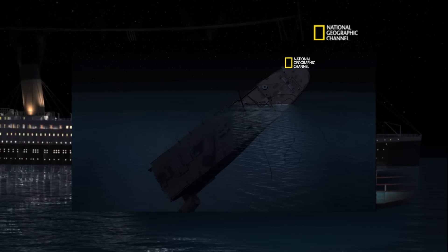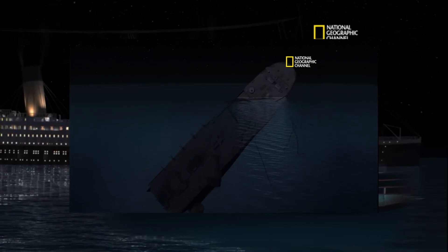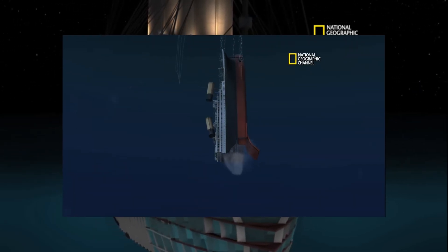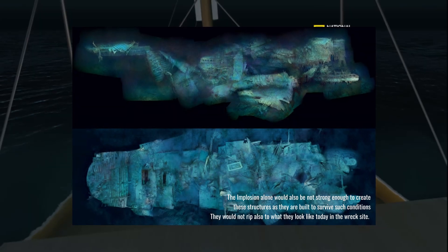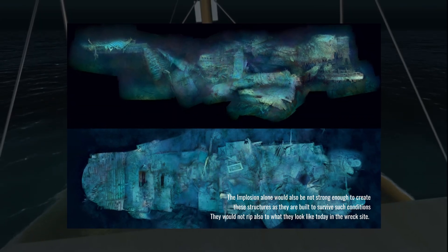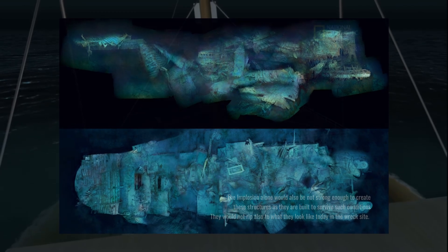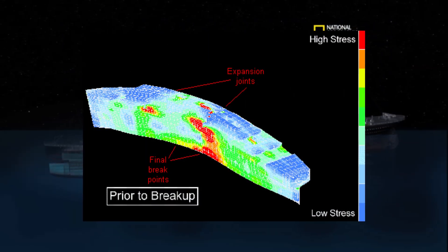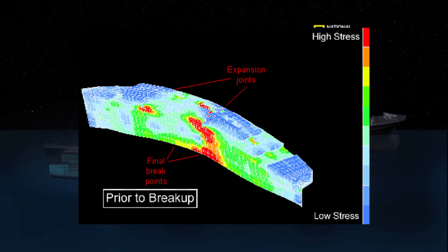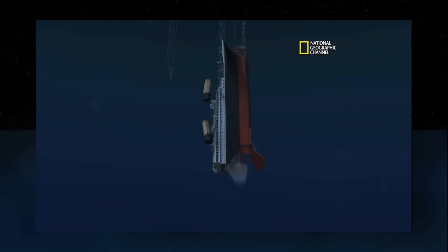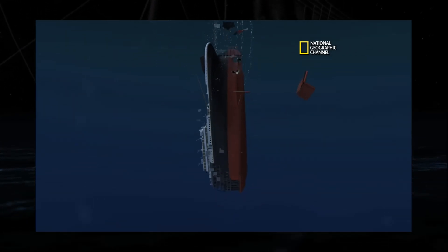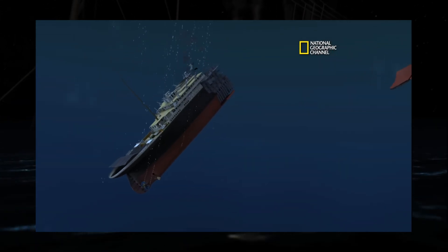According to James Cameron, the documentary's developer, and historians like Halpern, the towers formed due to the stern's implosion. However, analyzing the wreck shows that most of the wreckage had selective implosion areas. This suggests that the implosion did not generate enough force to form the towers, which are superstructures designed to withstand various environmental conditions. Implosion alone would not be sufficient to tear and form the superstructures as we know them today in the wreck.